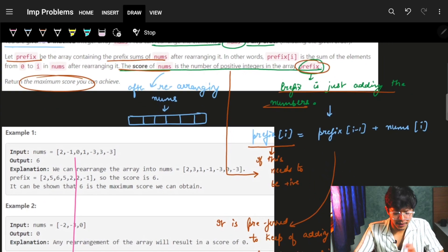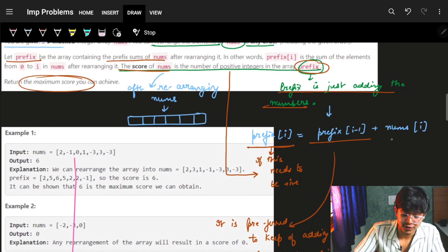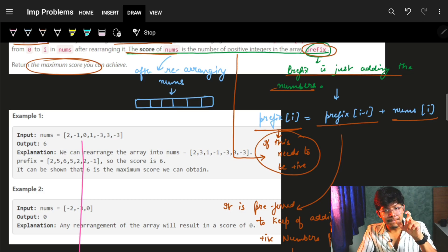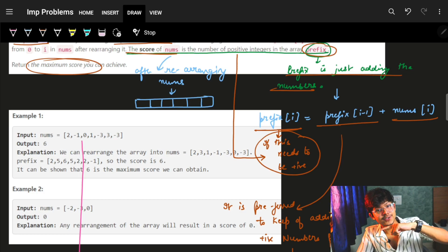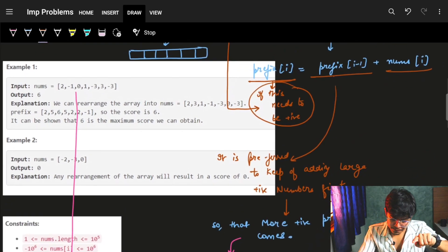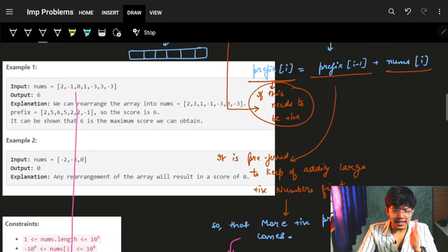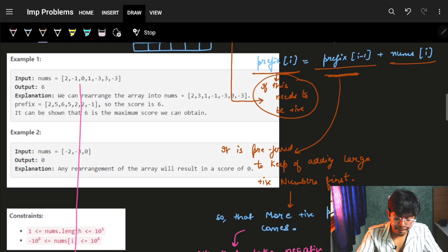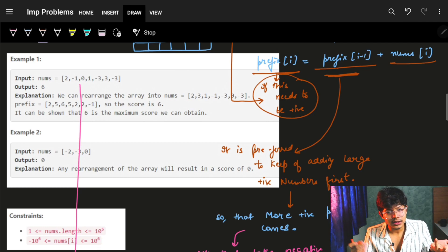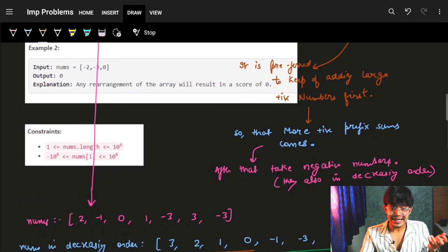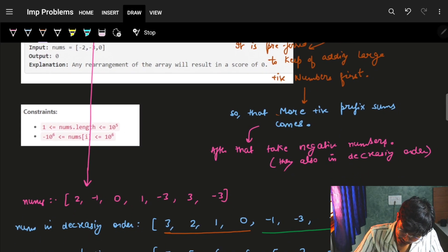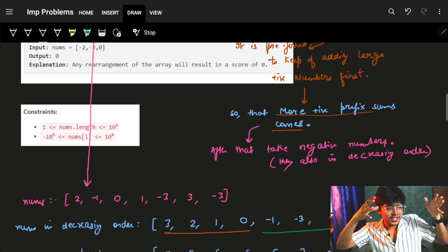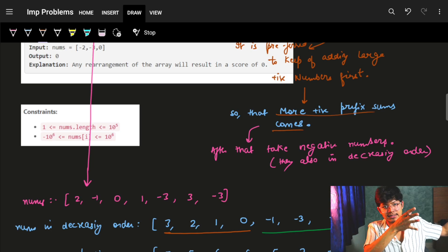Prefix is just adding numbers, which means prefix of i is nothing but prefix of i minus 1 plus nums of i. So we need to make this number as positive. You see one thing—it is just being added in the prefix. So basically it's always beneficial for me if my prefix of i minus 1 is as large as possible. Or I can easily say that more positive numbers in the prefix sums, because prefix sums just keep adding the previous numbers.